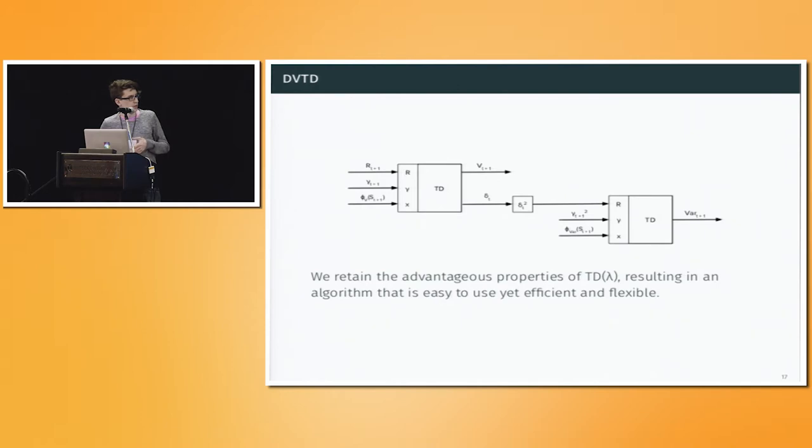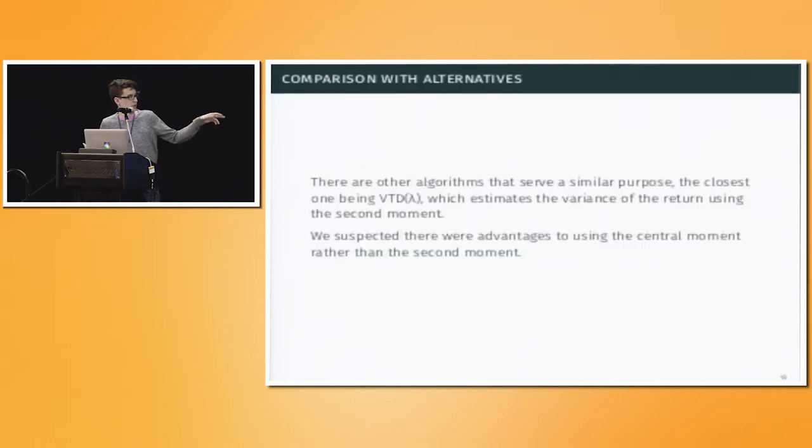If you wanted a look at how the data flows in such an algorithm, you just have the TD agent. It has a learning step that emits a TD error, square that, feed it into another TD algorithm, and that one is estimating the variance.